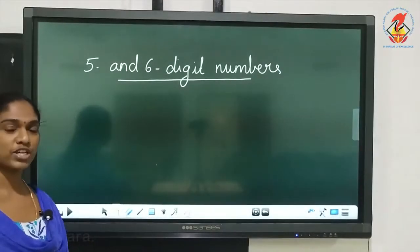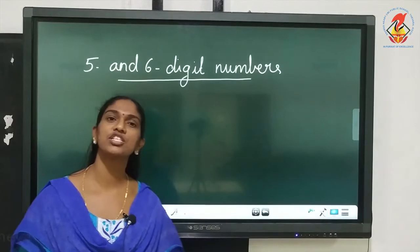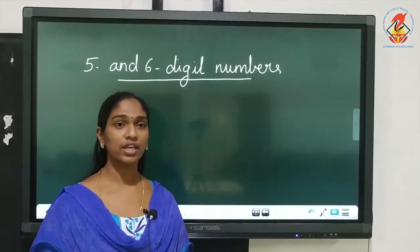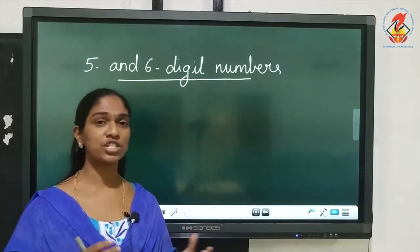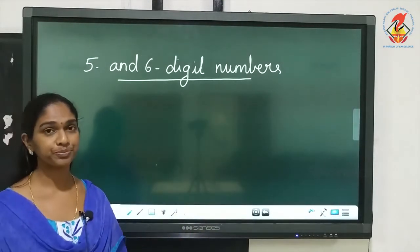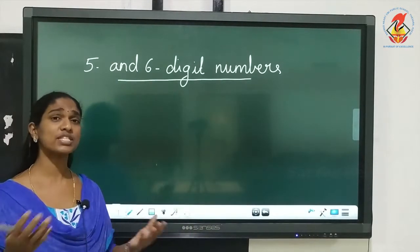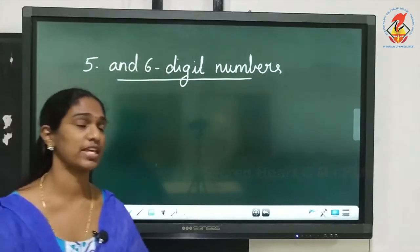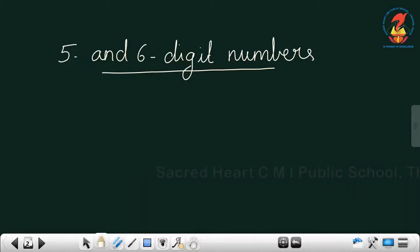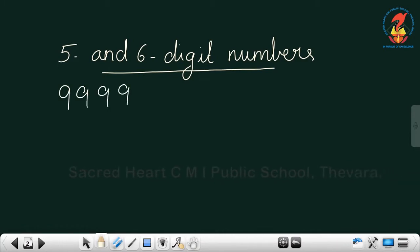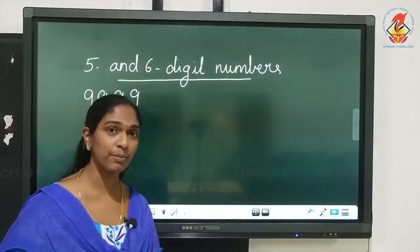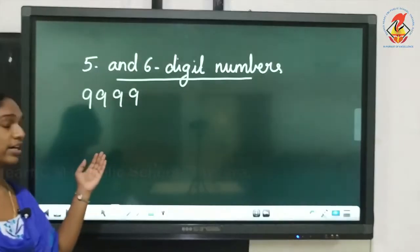First, coming to 5 and 6 digit numbers. You have already learnt in class 3 about 3 digit and 4 digit numbers. Which was the largest 4 digit number? Yes, the largest 4 digit number was 9999.